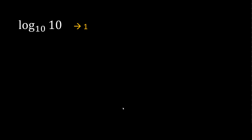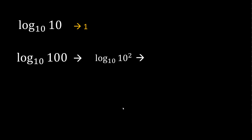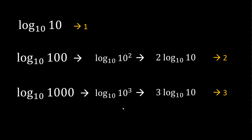If you have log 100 to the base 10, that can be written such that 2 comes to the front, and since log 10 to the base 10 is 1, this becomes 2. Similarly, log 1000 to the base 10 is 3.